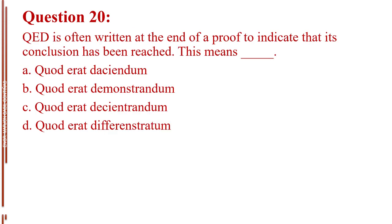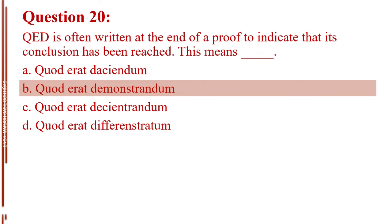Question number twenty. QED is often written at the end of a proof to indicate that its conclusion has been reached. This means blank. Letter A, quod erat desiendum. Letter B, quod erat demonstrandum. Letter C, quod erat deshentrandum. Letter D, quod erat differenstratum. The answer is Letter B, quod erat demonstrandum.